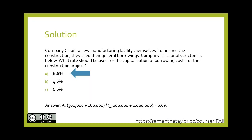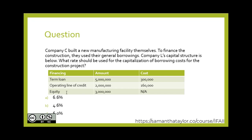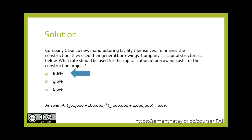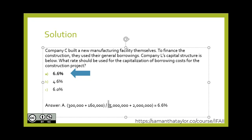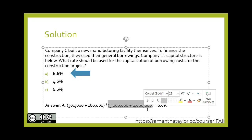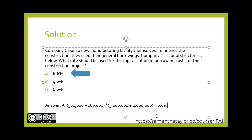If you said 6.6%, which represents the average of the term loan and the operating line of credit — not the equity — then you are correct. If you used an average of the costs associated with borrowing from the term loan and the operating line of credit, relative to the funds borrowed, to give you an average of 6.6%, then that would be correct.